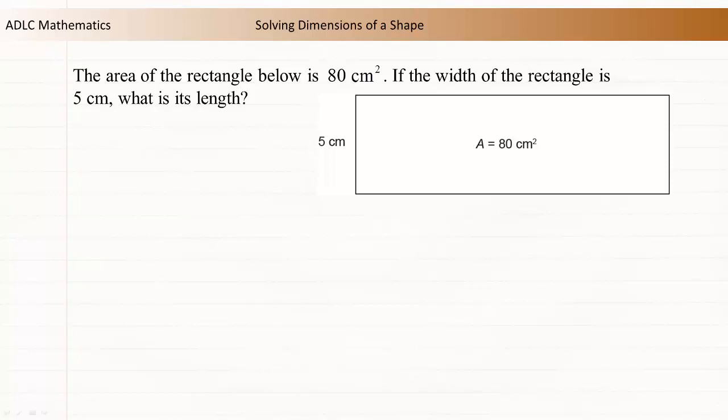The area of the rectangle shown is 80 cm squared. If the width of the rectangle is 5 cm, what is its length?